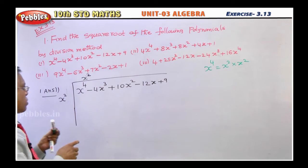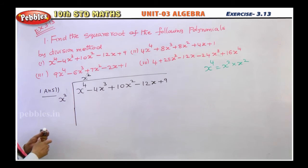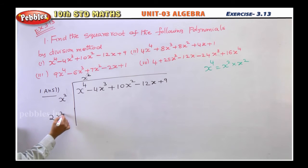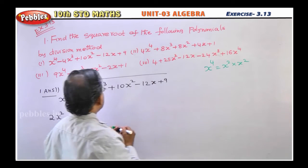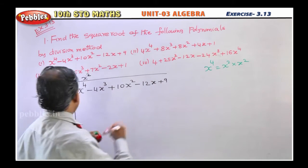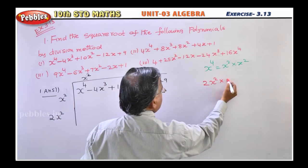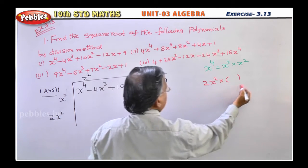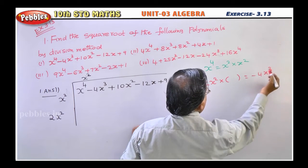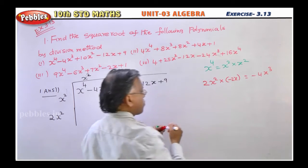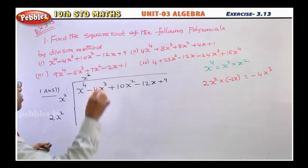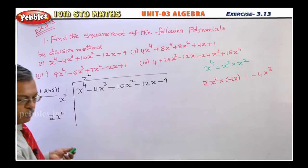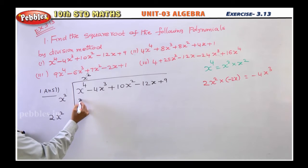Write one x² here and another x² here. In the next step, you should double the value of this one — that means x² becomes 2x². Now, 2x² multiplied by which factor should give minus 4x³? So 2x² multiplied by minus 2x gives the next term. Before that, we get rid of the first term: x² into x² gives x⁴.